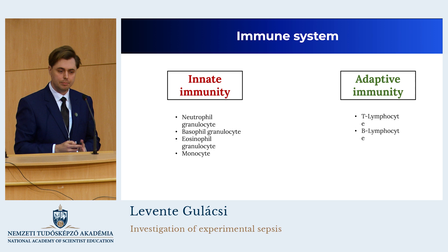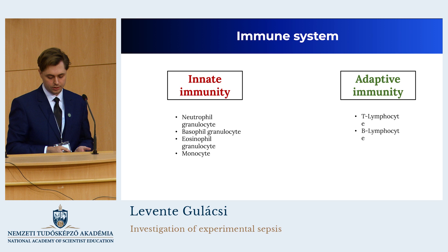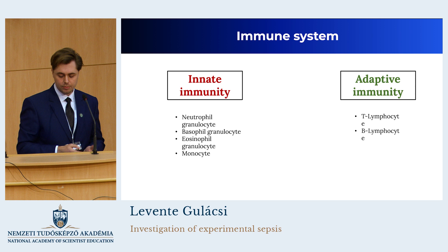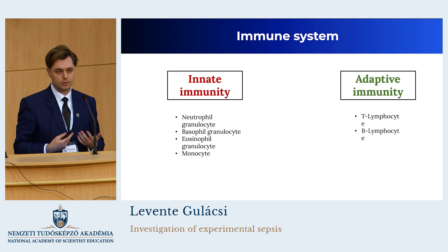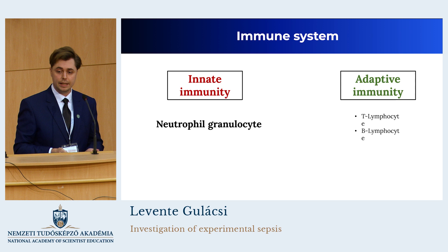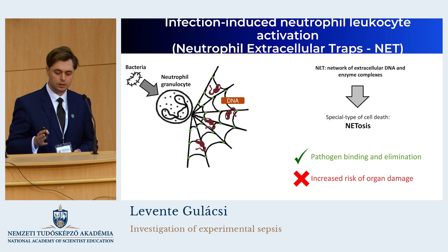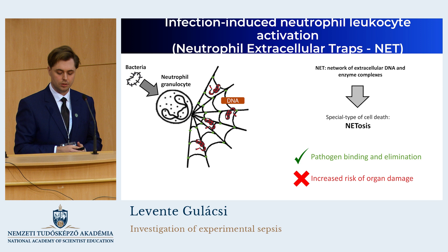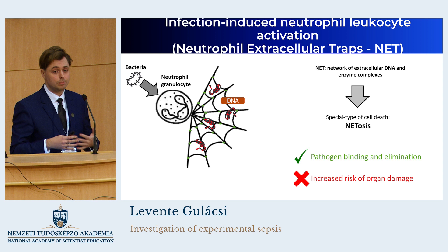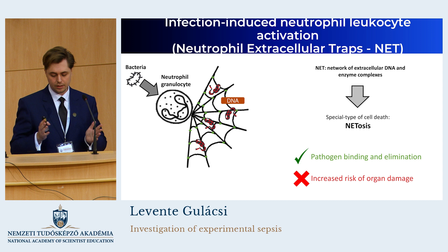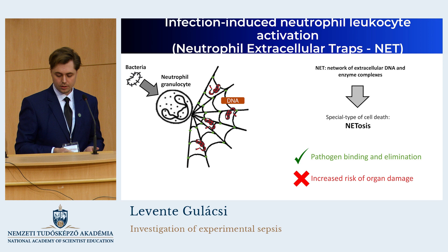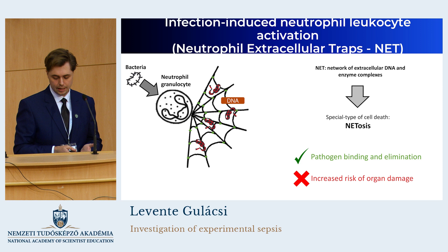The immune system has two main parts: the innate and the adaptive immunity, whose cells are T and B lymphocytes. During an acute inflammation such as sepsis, the innate immunity's neutrophil granulocytes play the most important role. The neutrophil granulocytes detect the presence of bacteria and, through several different enzymatic reactions, release their DNA into the extracellular space. This is imaginable like a spider connecting a spider web, composed of extracellular DNA and enzyme complexes. This special type of cell death is called NETosis. It has beneficial effects such as binding and eliminating pathogens, but it's a double-edged sword — it also increases the risk of organ damage.